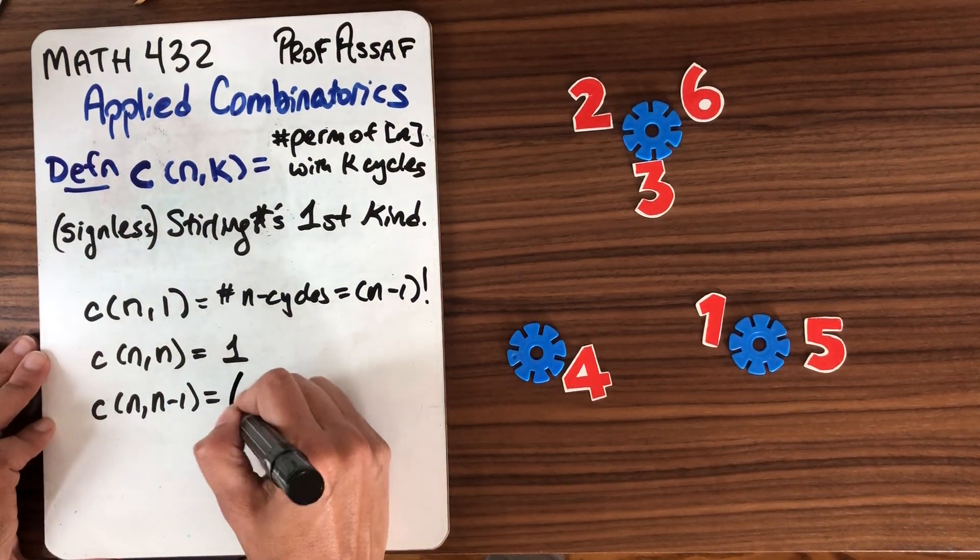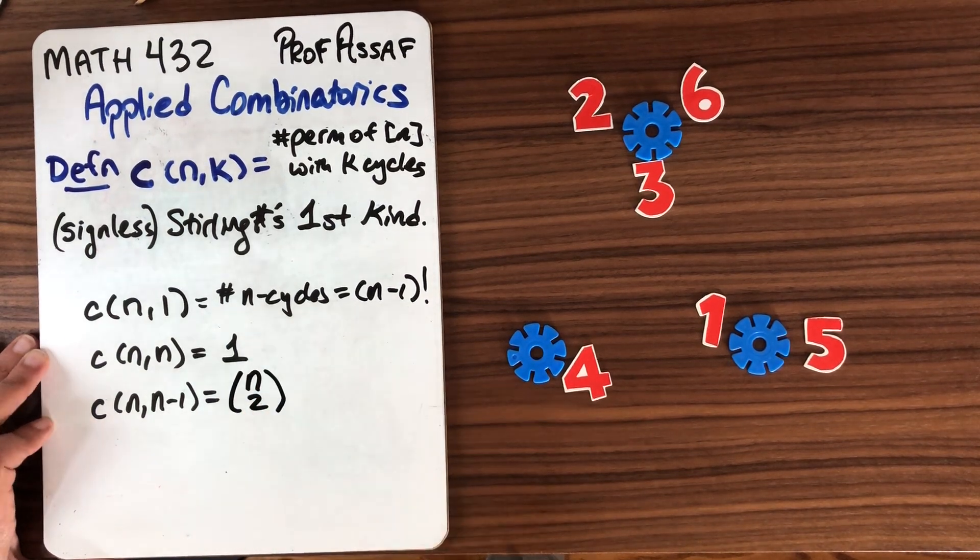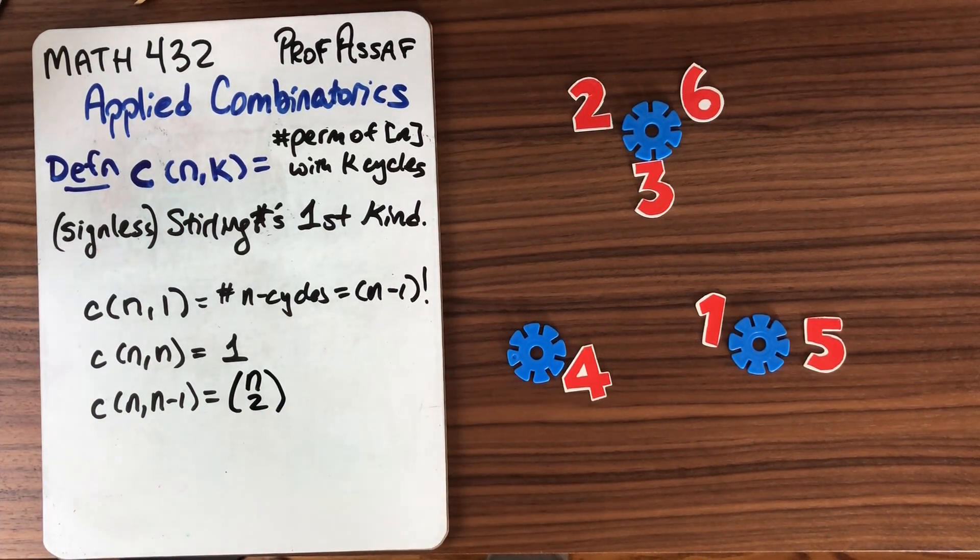So all that matters is which two numbers go together. So kind of like the Stirling numbers of the second kind this is actually just n choose 2. So that one's pretty easy.